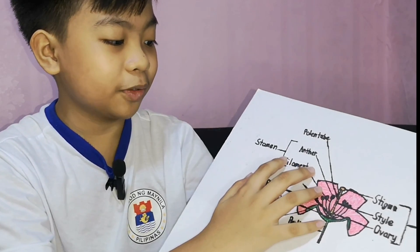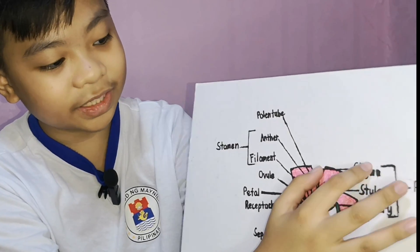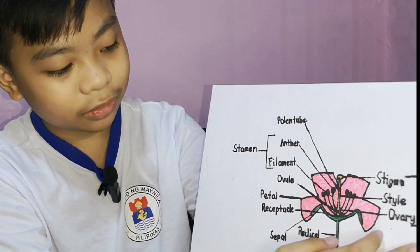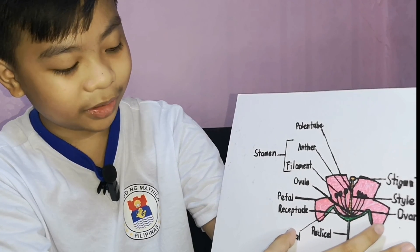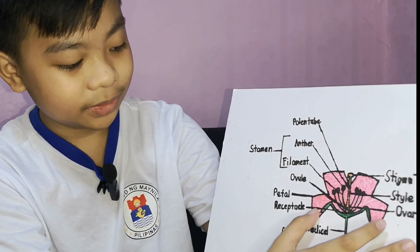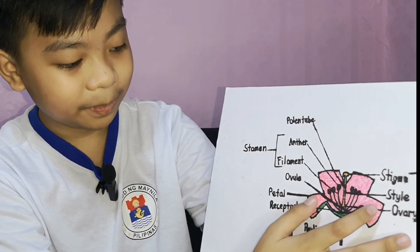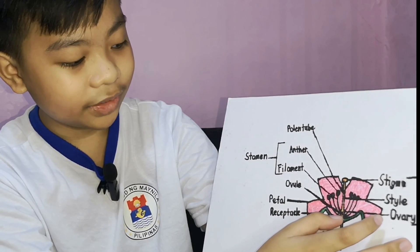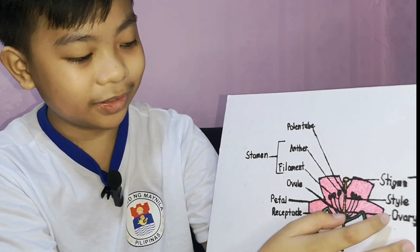Parts of the flower: the stamen is composed of anther and filament. The pistil is composed of stigma, style, and ovary. The pedicle is the one that holds up the flower. The sepal is the important part that holds the petals. The petals are the colorful part of a flower. The pedicle is found under the ovary. The ovule is the one that grows on the ovary.